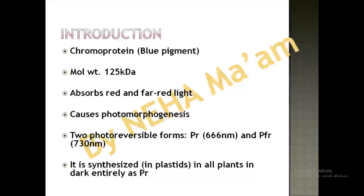Phytochrome is also known as a blue pigment or a chromoprotein. Its molecular weight is 125 kilodaltons and it absorbs both red and far-red light. It causes photomorphogenesis — that is, changes in the morphology of the organism based on light intensity. There are two photoreversible forms present in phytochrome: one is PR and another is PFR.